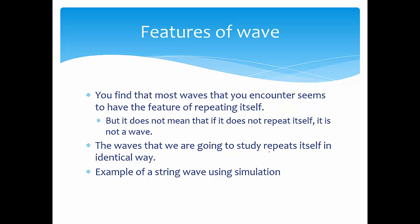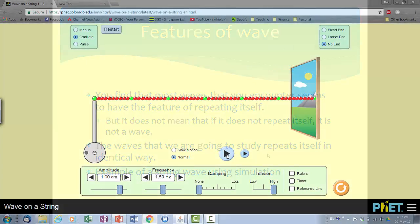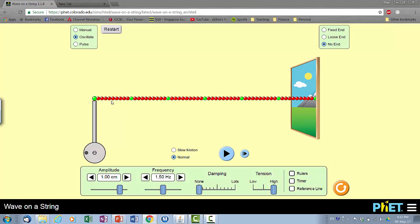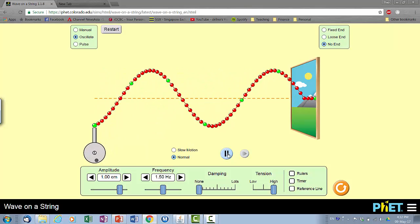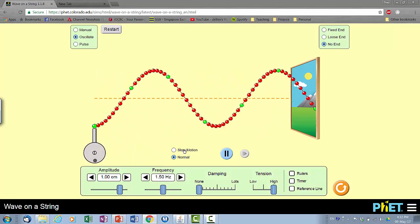The wave that we are going to study will be repeating itself in identical ways. Using an example of a string wave using a simulation, you'll find that this is just a simulation of a string and we'll generate waves by playing the play button over here. You see that this is quite similar in terms of pattern that you see in the water. Let's see it in slow motion.